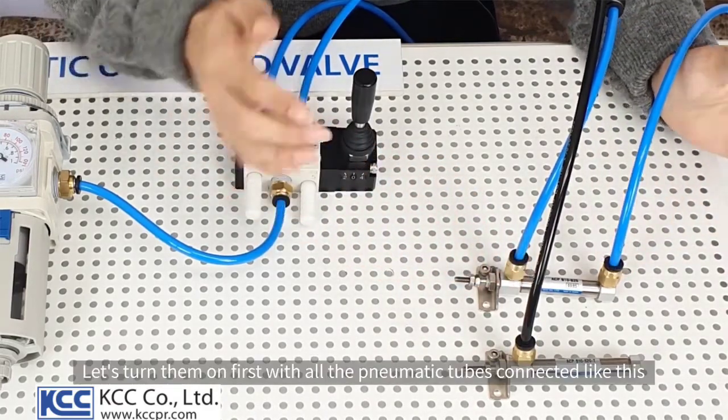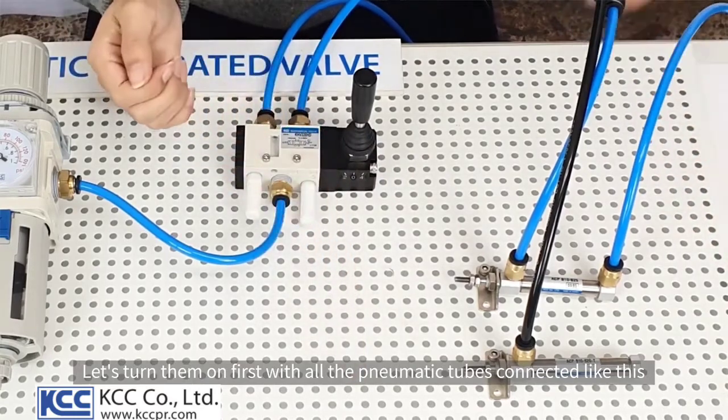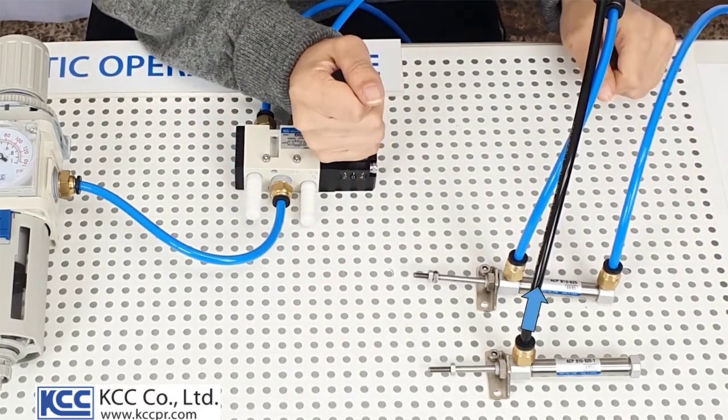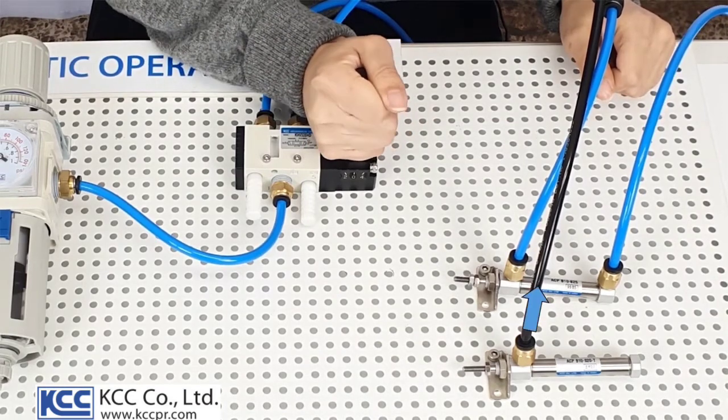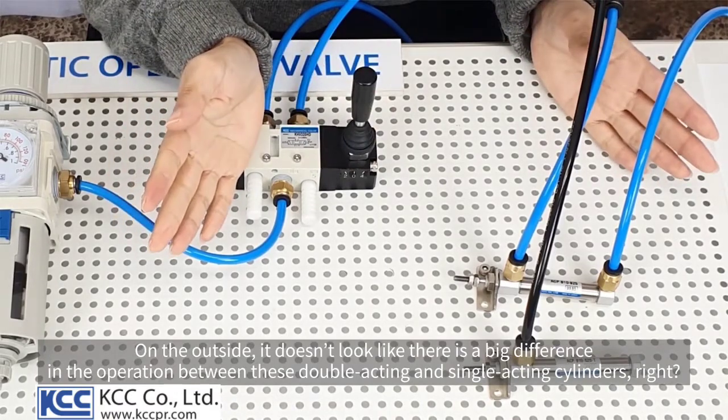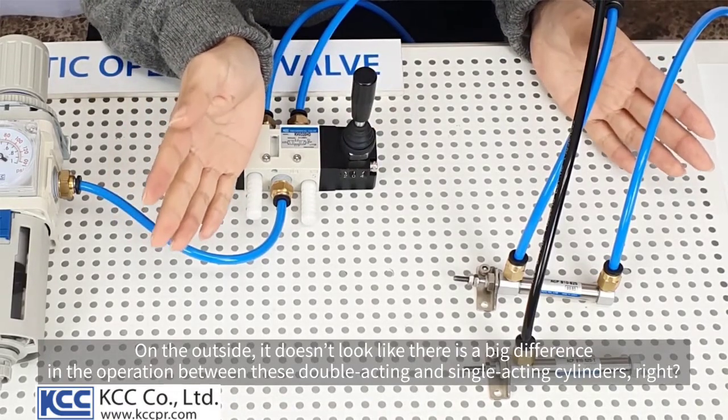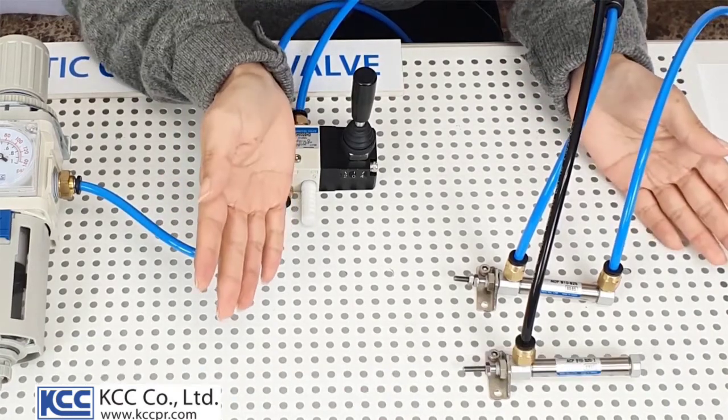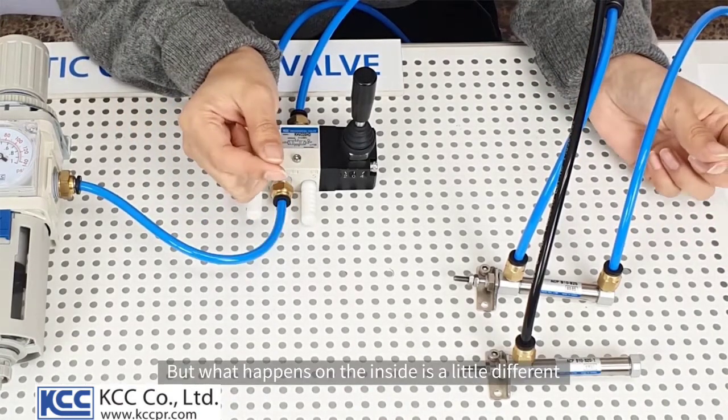Let's turn them on first with all the pneumatic tubes connected like this. On the outside, it doesn't look like there is a big difference in the operation between these double-acting and single-acting cylinders, right? But what happens on the inside is a little different.